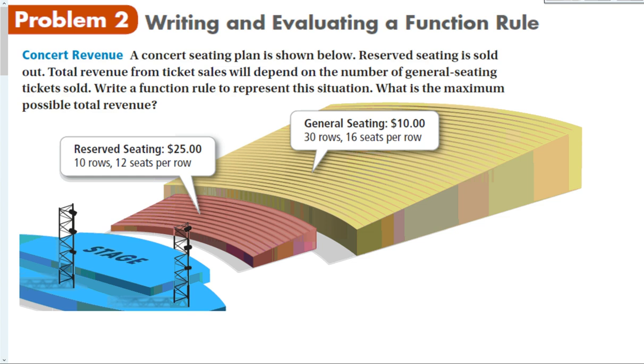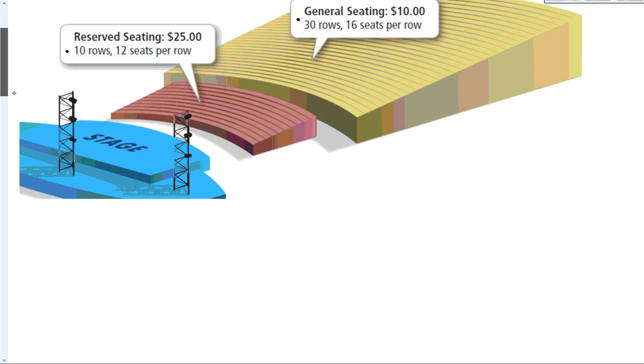Let's look at another situation here. A concert seating plan is shown below. Reserve seating is sold out. Total revenue from ticket sales will depend on the number of general seating tickets sold. Write a function rule that represents this situation. And what is the maximum possible total revenue? So we're going to sell this out. We could sell this out. And that is going to be where the maximum revenue occurs is when we sell every ticket.